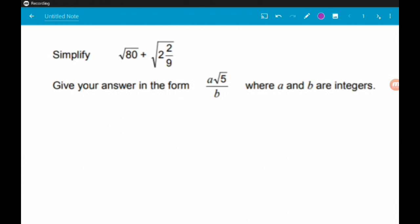Okay, so we want to simplify root 80 and root 2 and 2 ninths, giving our answer in the form a root 5 over b where a and b are integers. So, break this up. First of all, let's simplify root 80.